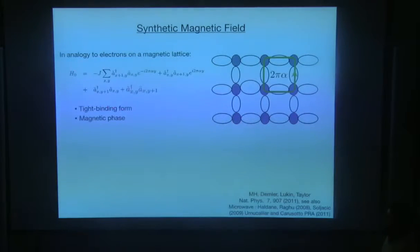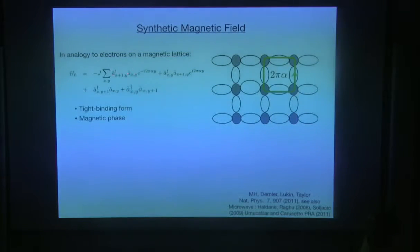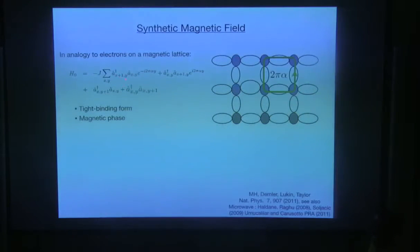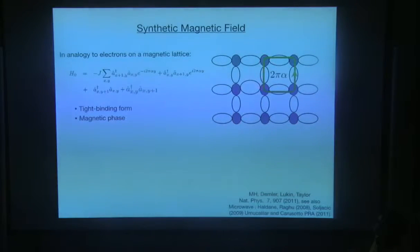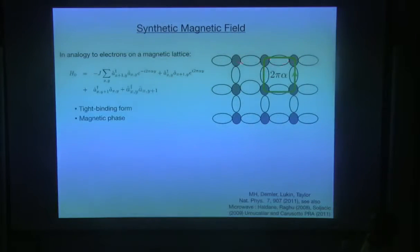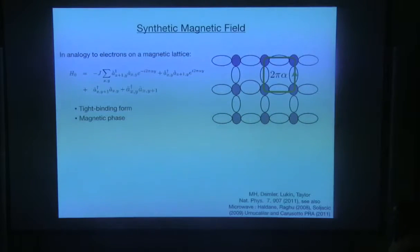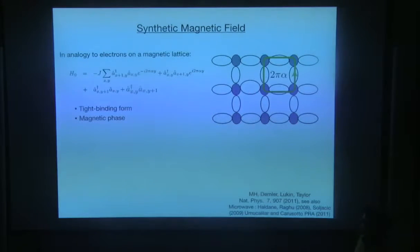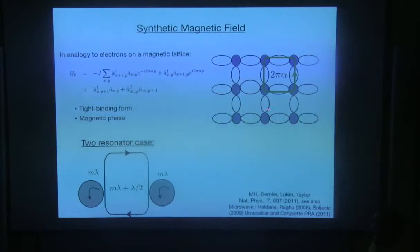More formally, we should have a Hamiltonian of this type. When hopping, these are the creation and annihilation operators of photons in different sites — x,y and x+1,y. In one direction we assume they don't acquire any phase, but in this direction they should acquire a phase that increases as a function of the row number, such that when they form a full loop, they acquire a non-zero phase. It turned out that there is actually a very easy way to implement this.